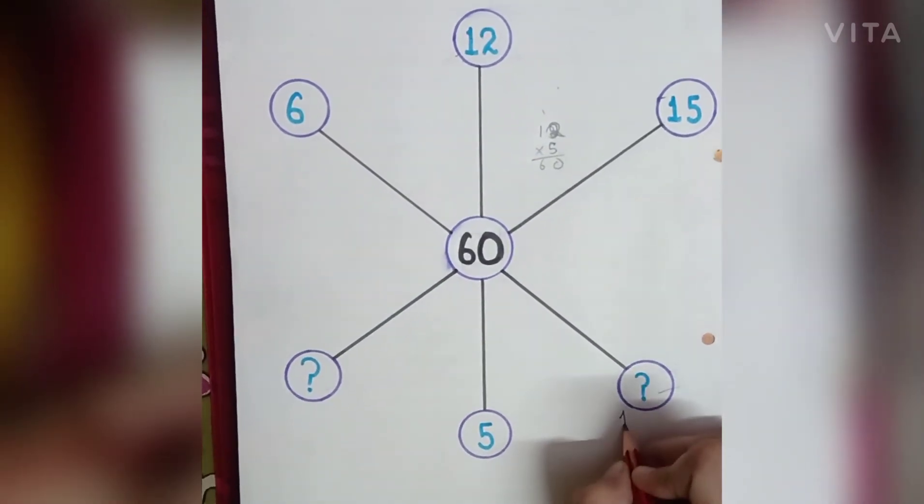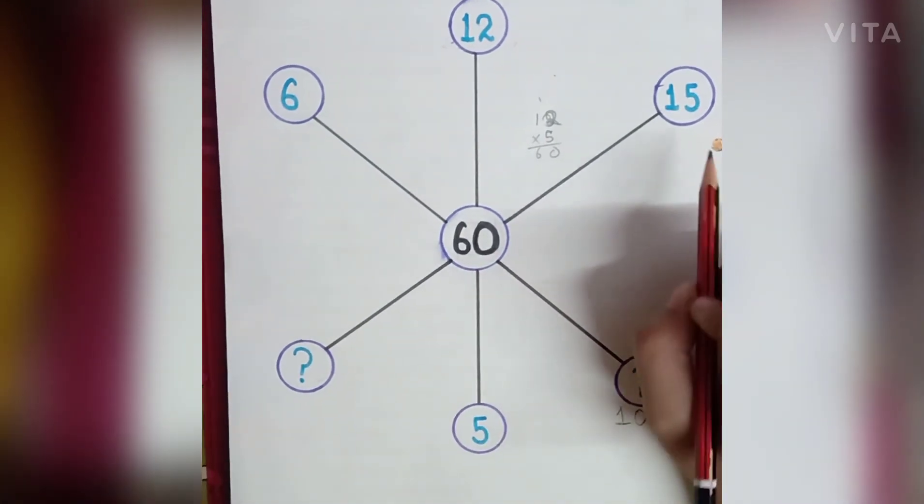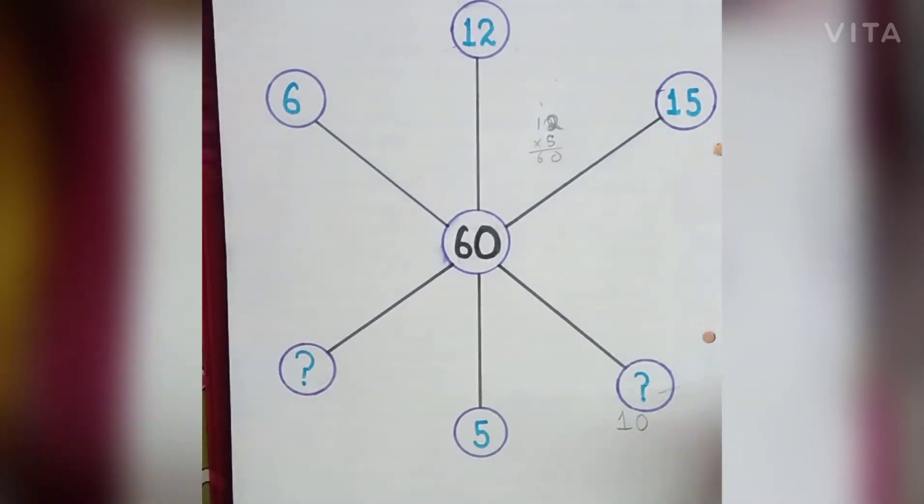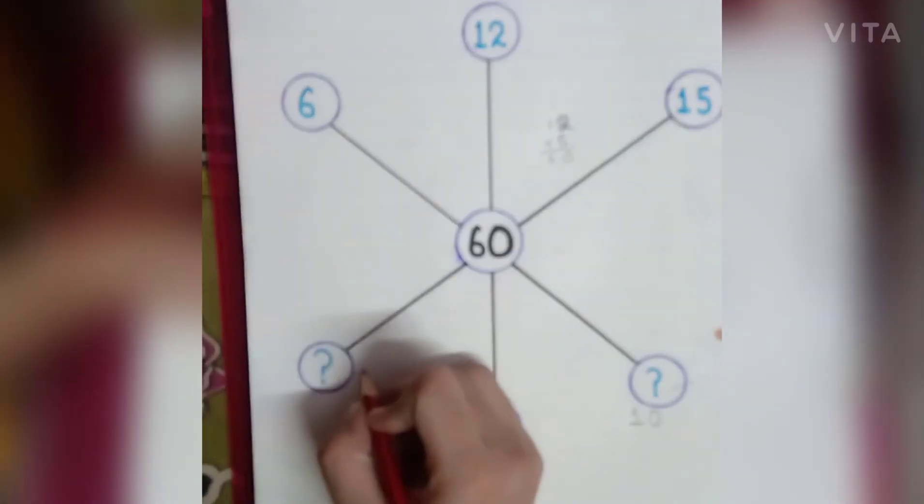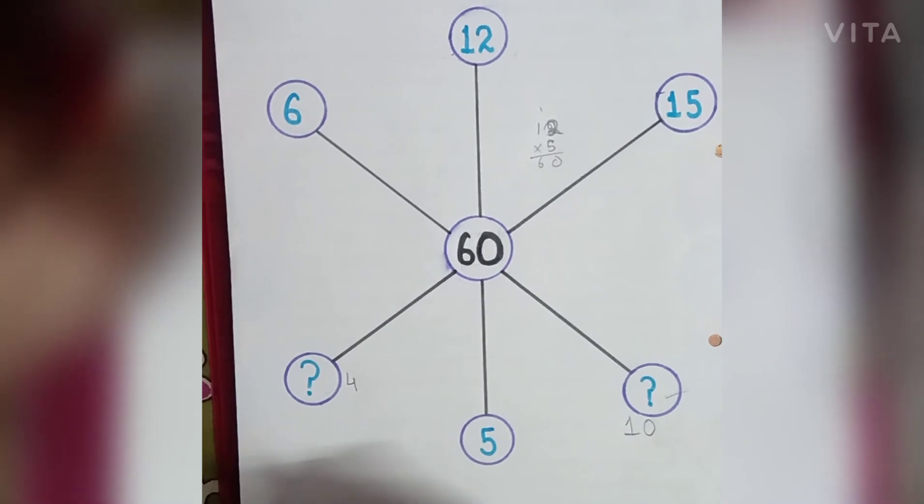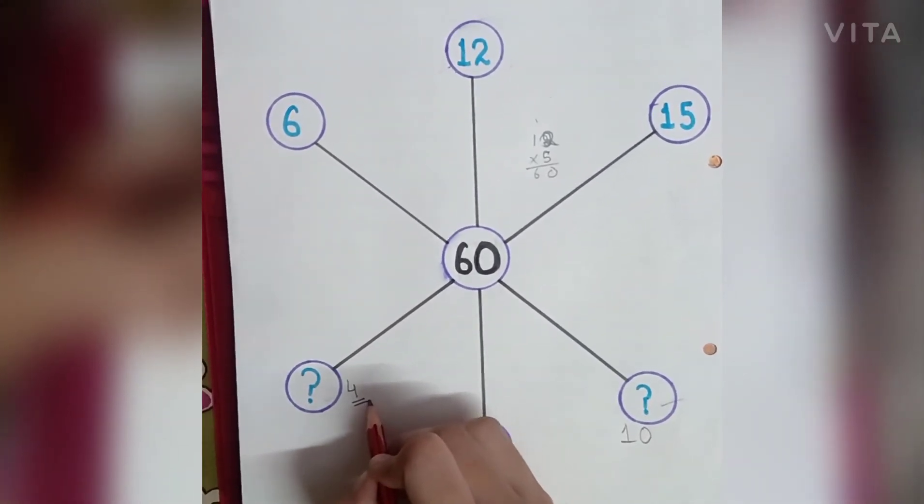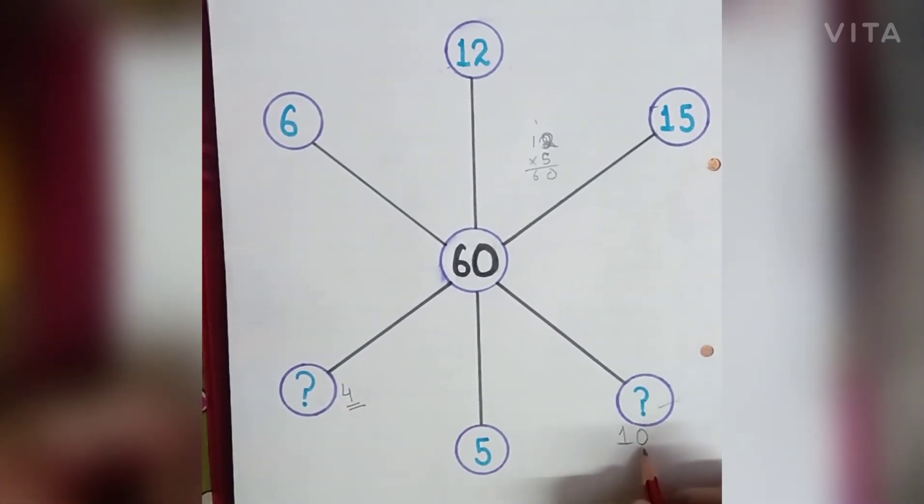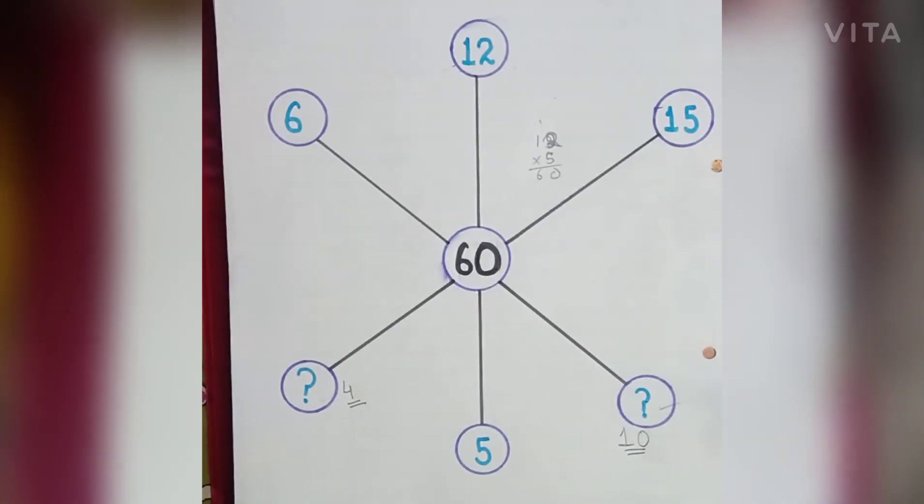And if we multiply 15 with what number, guess. So if we multiply 15 with number 4, then we will get number 60. So in these question marks, the first answer will be 4 and the second answer will be 10. So here I end this video. Thank you for watching.